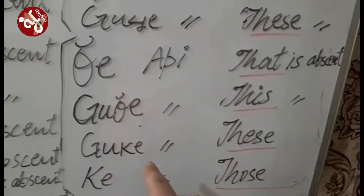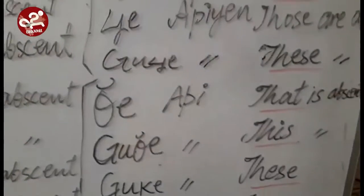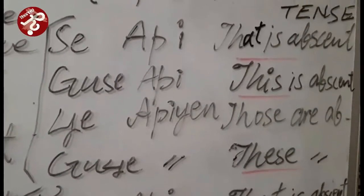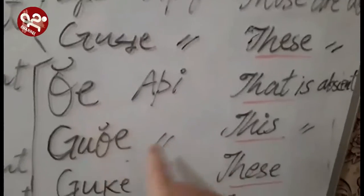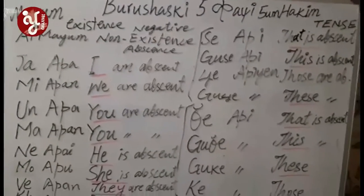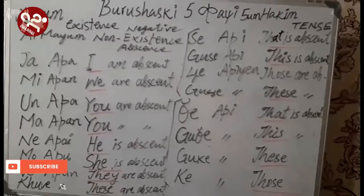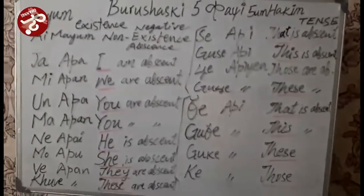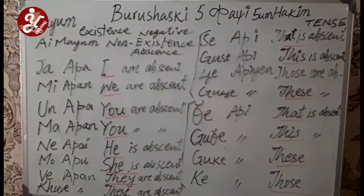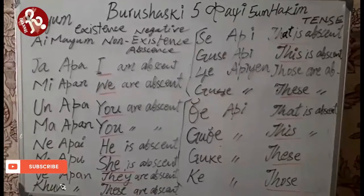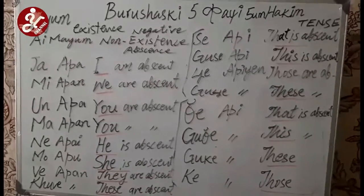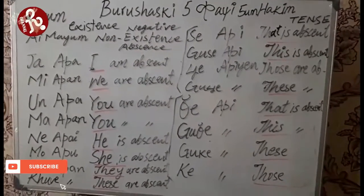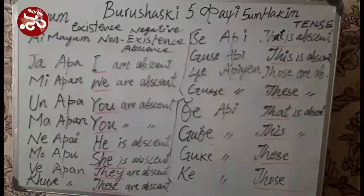These are Aymayums because they show the absence of things. We have already studied the presence and existence of things — the Mayums. So Mayum means existence and Aymayum means non-existence. You can take a screenshot of this, and a screenshot will also be added in the comments. We will meet in the next chapter, chapter five, which is about Dorong. Dorong means works — how you express works and verbs in Burushaski. We will explain the Dorong in the next chapter.